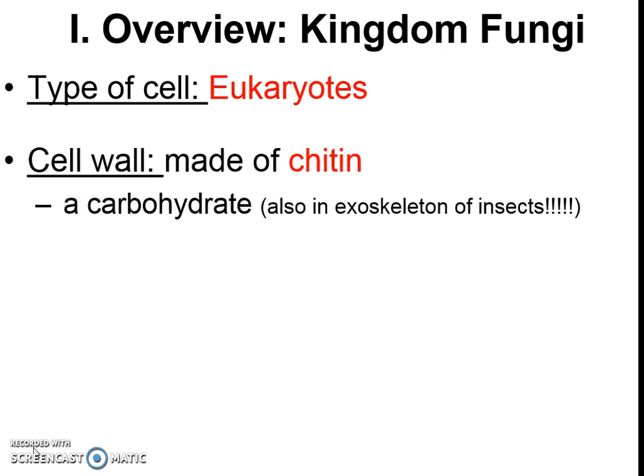They do have a cell wall just like plants, but the cell wall in plants is different. This cell wall is made of chitin — that's a carbohydrate found in the exoskeleton of insects, which is super bizarre. For plants, it's a totally different component that makes up their cell wall.